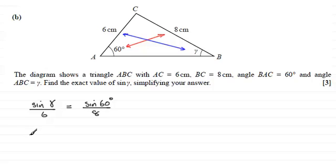So to work out the sine of gamma, all we need to do is multiply both sides by six. So we get six times the sine of 60 degrees and this is divided by eight.